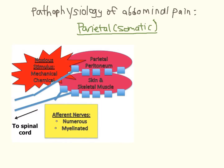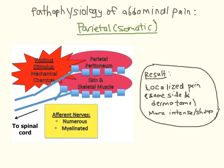In contrast, somatic pain arises from receptors in the skin, skeletal muscle, and parietal peritoneum. It is carried by afferents that are numerous, myelinated, and transmit signals unilaterally to specific spinal levels, which are represented as dermatomes. It is thus localized, intense, and more likely to be increased with movement.